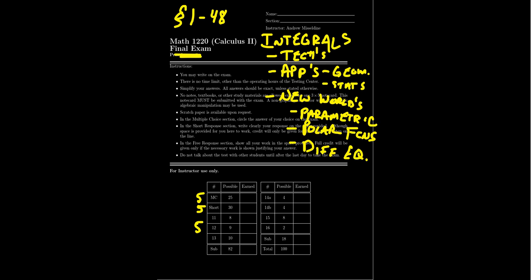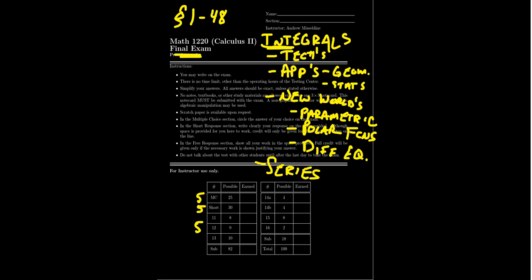Sequences and series is another extremely important topic we've explored this semester. Series can be put under the integral label — a series is just a discrete improper integral, and we have to be able to evaluate or approximate them. Oftentimes we're interested in convergence or divergence, and we need to know our convergence tests. Can we determine whether a series is convergent or divergent and justify it? We are also very interested in power series — this is especially important to mention because power series have not appeared on any previous midterm exams, but they will be on the final exam. Power series topics showed up in lessons 43 through 48.